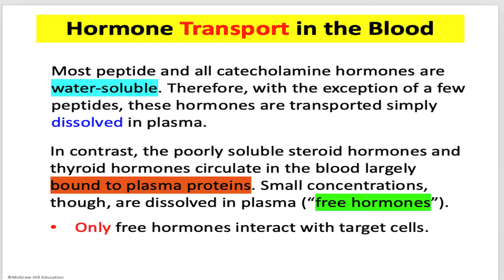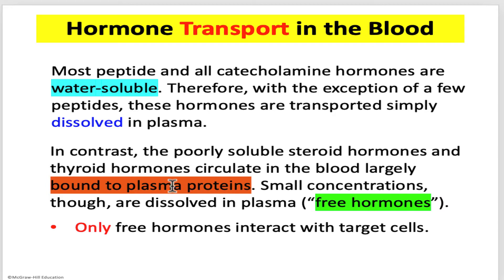We recall that hormones are produced and released into the blood supply to travel to their target destinations. There are two classes of hormone: water-soluble and water-insoluble. Most peptides and all catecholamines are water-soluble, so they can simply dissolve in the plasma and be carried to their destination. But lipid-soluble hormones have very poor solubility in water and have to be packaged in alternative forms for transport, although some can dissolve in small concentrations in the plasma as free hormones. Most are coupled in some form to plasma proteins.